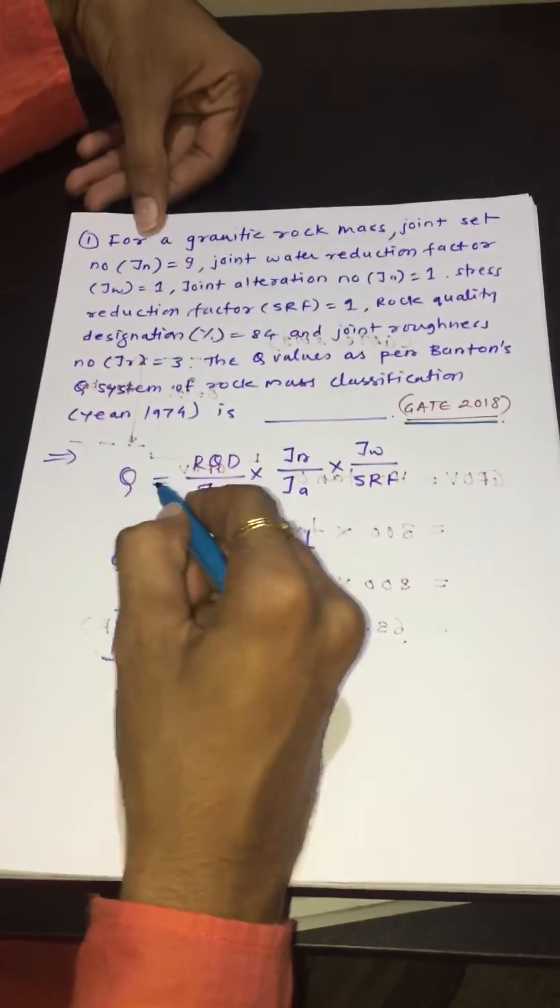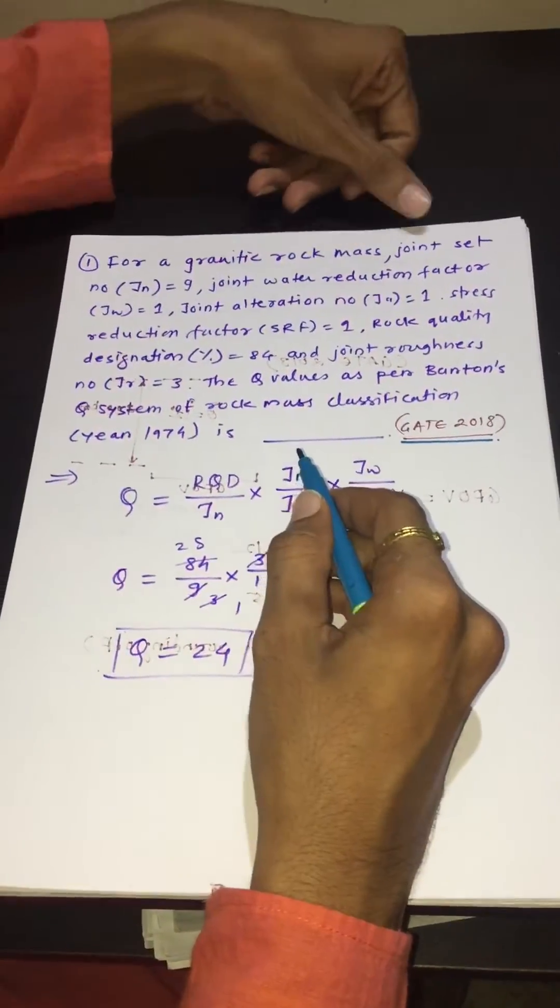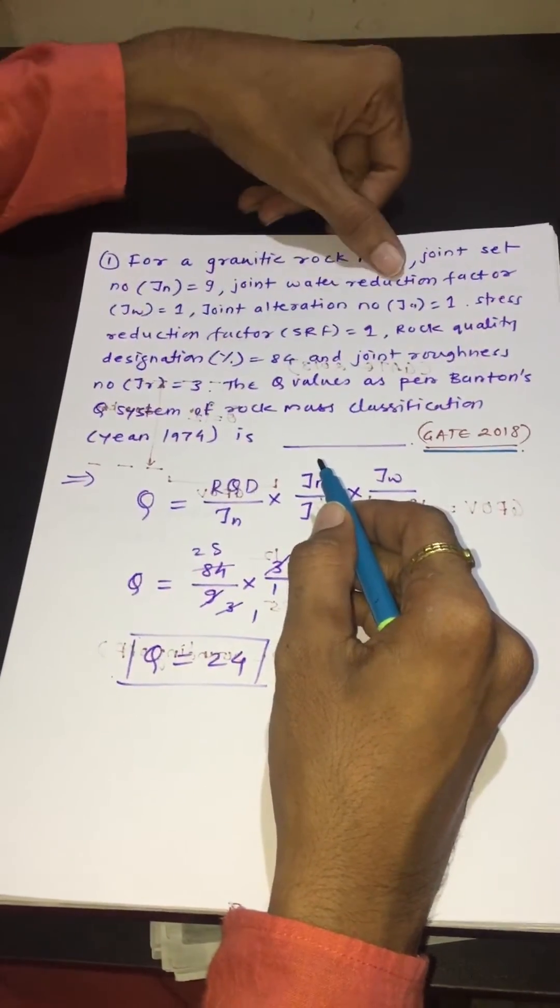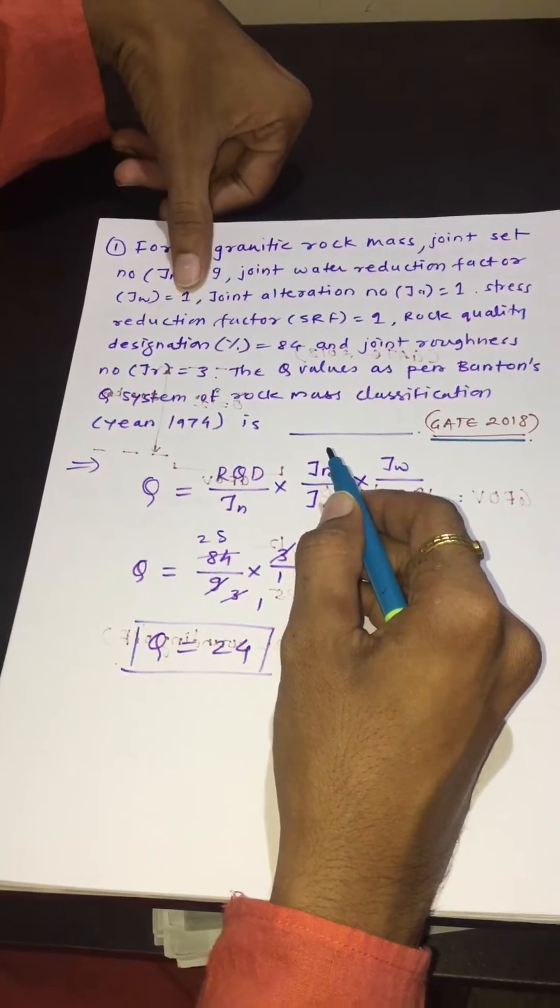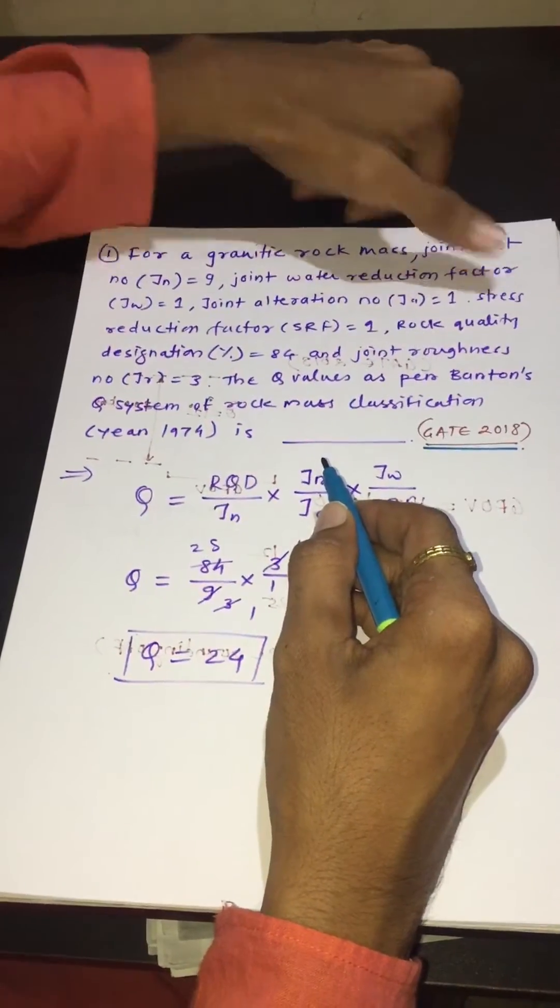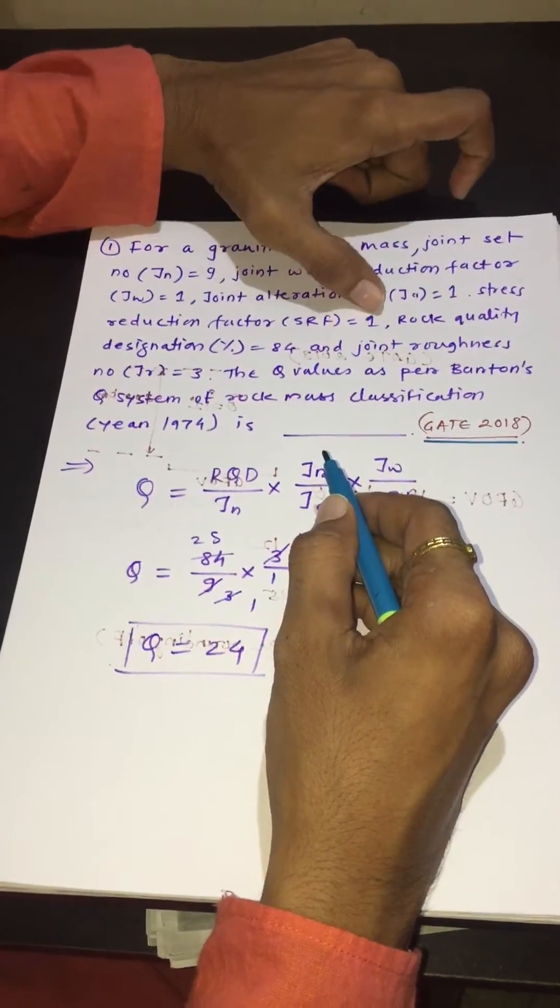The question is for a granitic rock mass, joint set number Jn is equal to 9, joint water reduction factor Jw is equal to 1, joint alteration number Ja is equal to 1, stress reduction factor SRF is equal to 1.